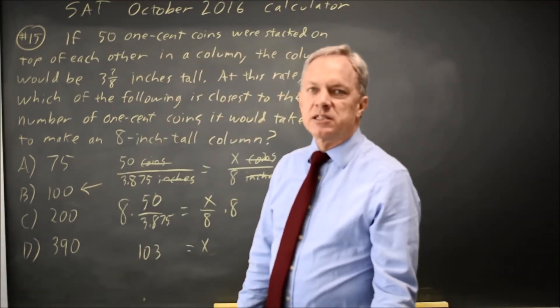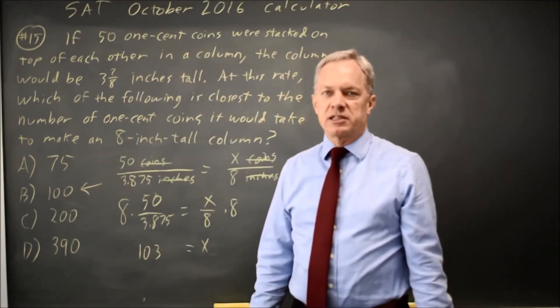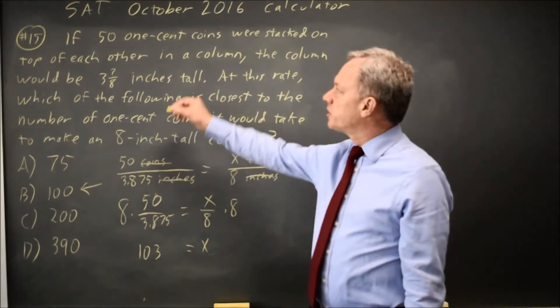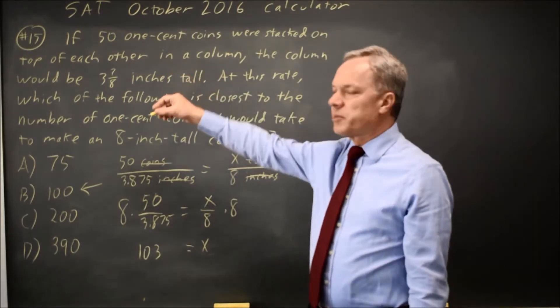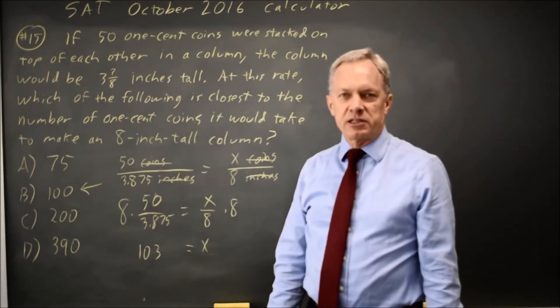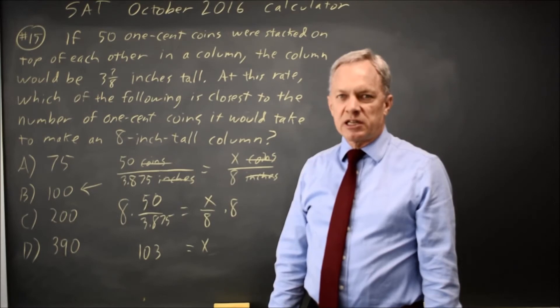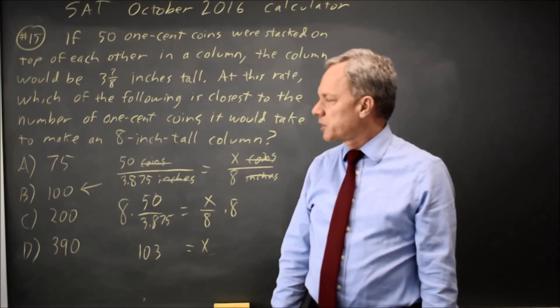Alternatively, instead of solving exactly, I could have estimated: 50 coins are about 4 inches tall. So if I want twice the height — 8 inches — I want twice as many coins, about 100.